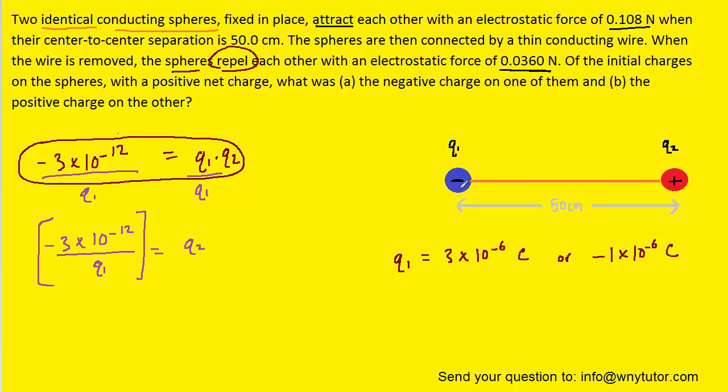We recall from our original setup that we let q1 equal a negative charge. So we can keep this value for q1 and reject the other one.